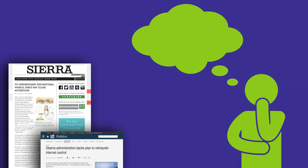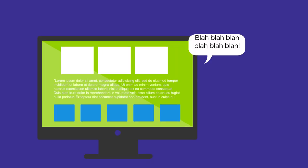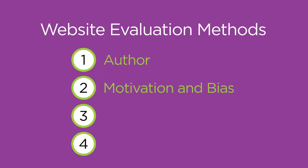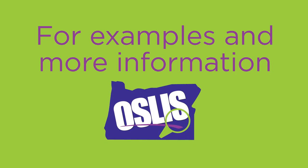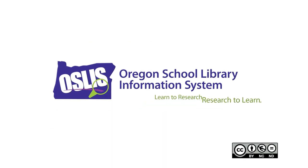When you're researching on the web, be a skeptic. When you're taking in any information, it's good to think about factors that might impact it. This will help you to make stronger arguments and better decisions. You'd be skeptical about a stranger's word on the street — it's good to think about internet sources the same way. Consider the four evaluation criteria: author, motivation and bias, evidence, and timeliness. What you discover will influence whether or not to use the website as a source for your paper or for life decisions. For specific examples and more information about this topic and the entire research process, explore OSLIS. Learn to research. Research to learn.